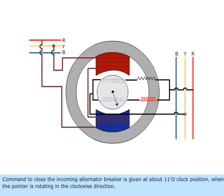The command to close the incoming alternator breaker is given at about 1 o'clock position when the pointer is rotating in the anticlockwise direction.